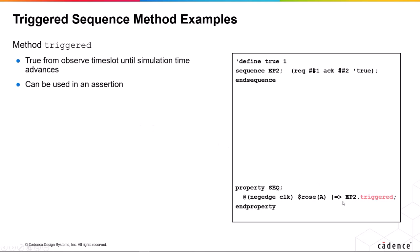We can use it in an assertion as we've seen there. Remember that it's just a Boolean. That's all it is. The .triggered returns a Boolean.